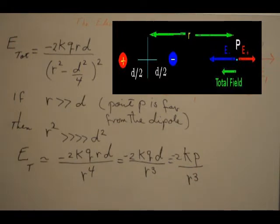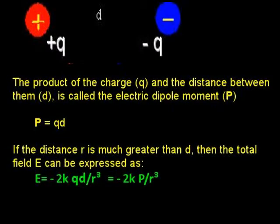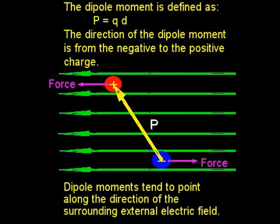This can be written in terms of a quantity called the dipole moment, which is denoted by the letter P. The dipole moment is defined as P equals the charge q times the distance between the two charges. The direction of the dipole moment is from the negative to the positive charge. When the dipole is placed in an external electric field, the dipole moment tends to point along the direction of the external field.